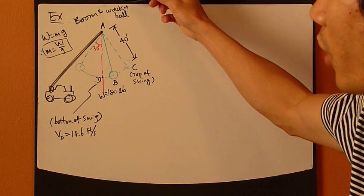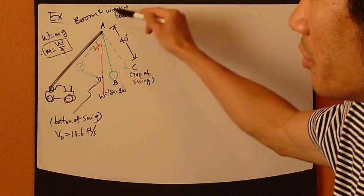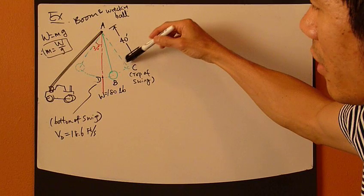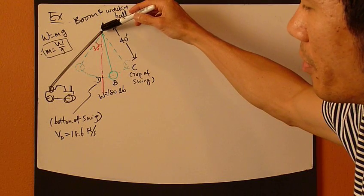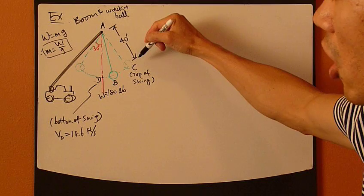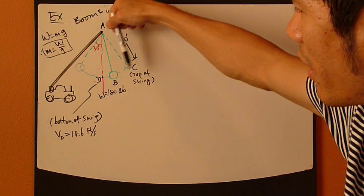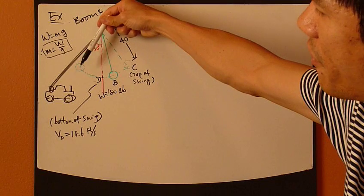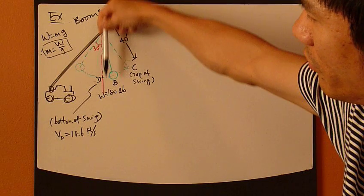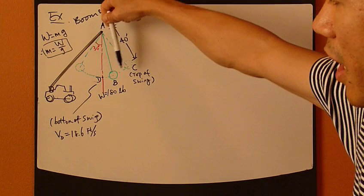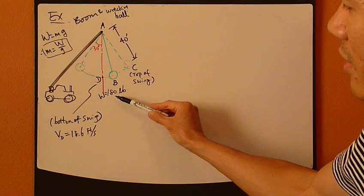Now we have a wrecking ball and a boom. There's a rope that attaches the wrecking ball to the top of the boom. The rope is 40 feet long, and it swings back and forth at 30 degrees from the centerline, from the vertical line, each way.